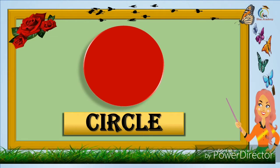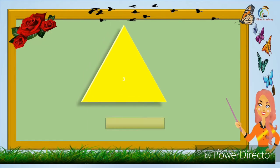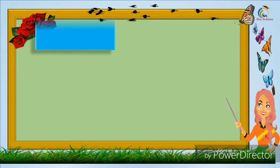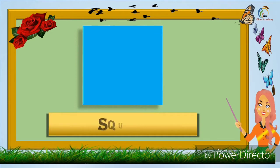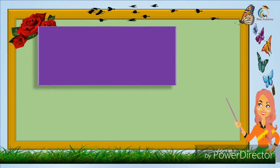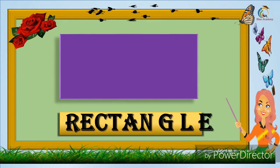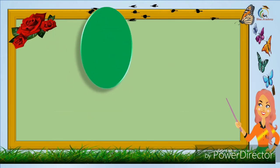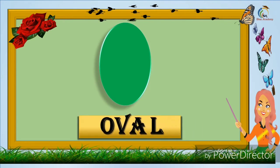Circle. Triangle. Square. Rectangle. Hexagon. Oval.